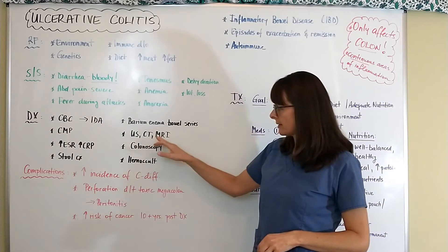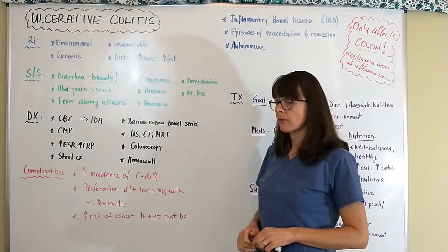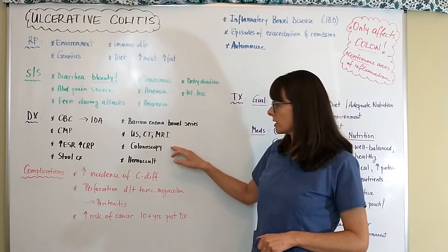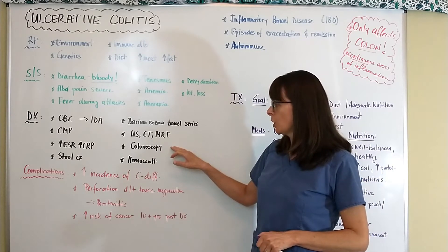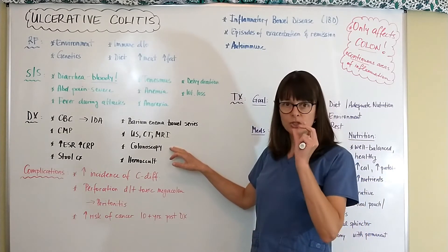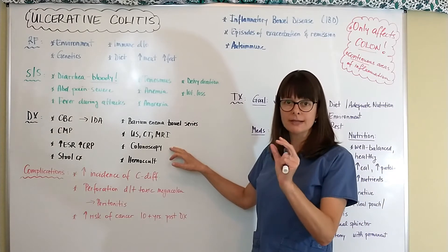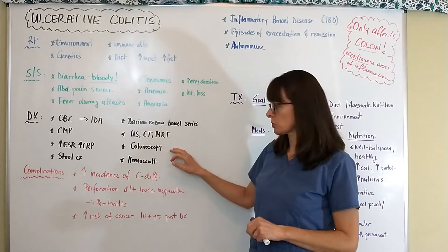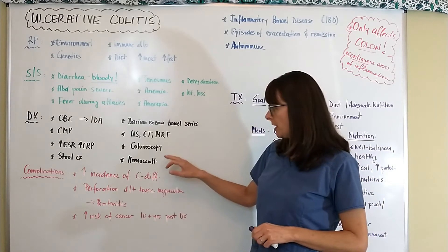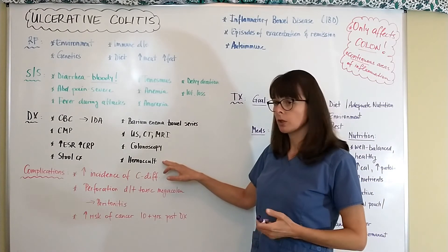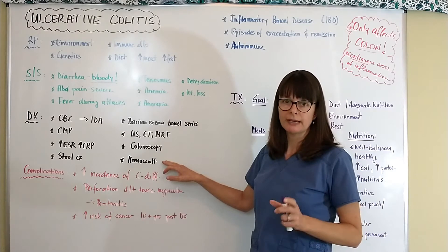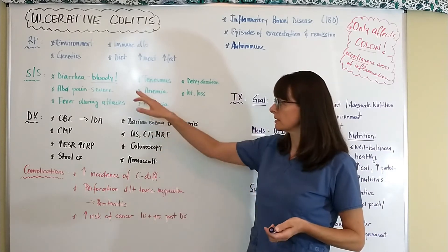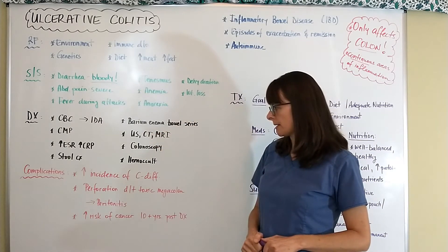Ultrasound, CT, and MRI scans are also helpful, as well as a colonoscopy to directly visualize the inside of the colon. A hemoccult test will determine if there is blood in the stool when it is not obvious bloody diarrhea.